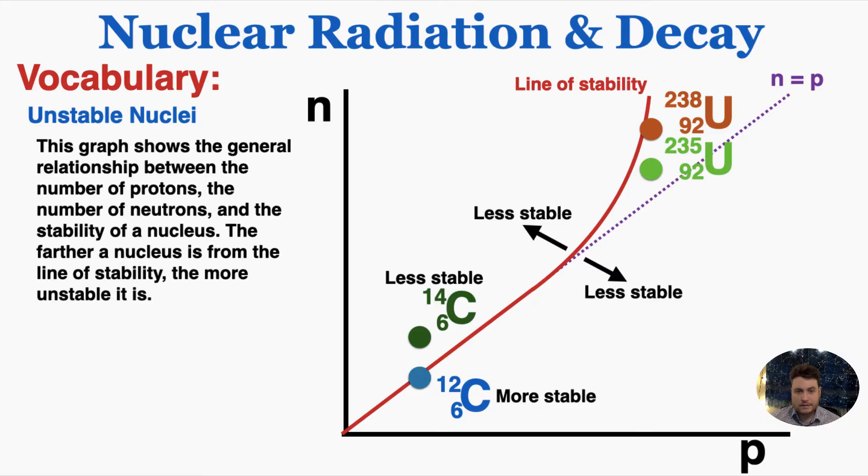Uranium-238 has so many protons that bringing the protons and neutrons closer together actually makes it less stable. That's the general relationship between the number of protons, neutrons, and how stable the isotope is.